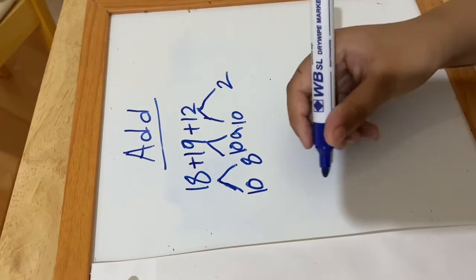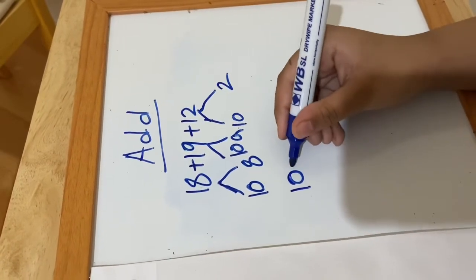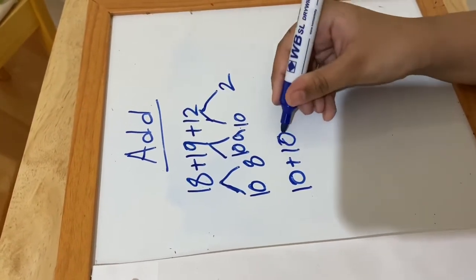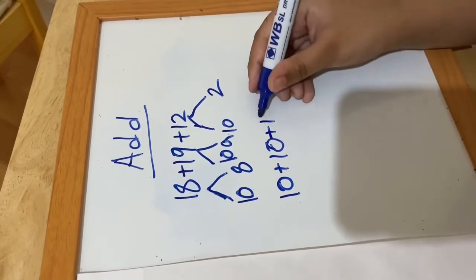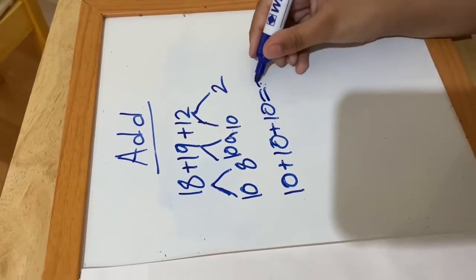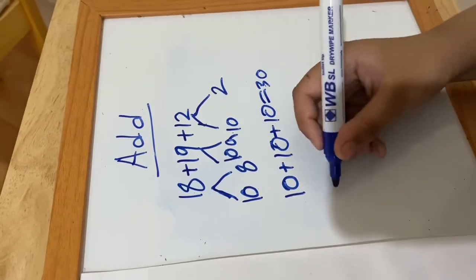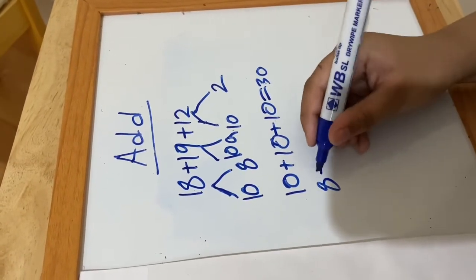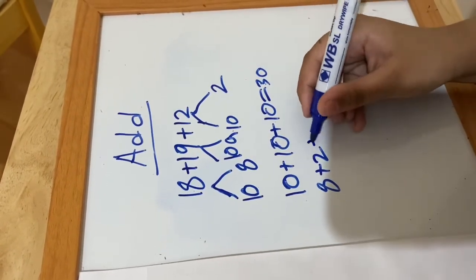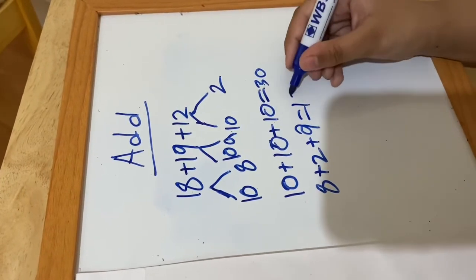And now you first add the tens: 10 plus 10 plus 10 equals 30. And 8 plus 2 plus 9 equals 19.